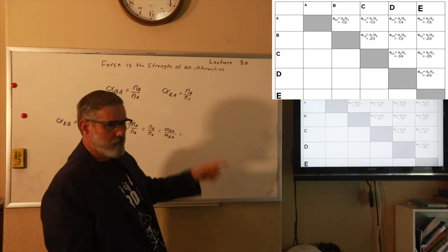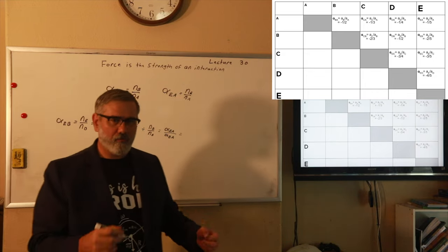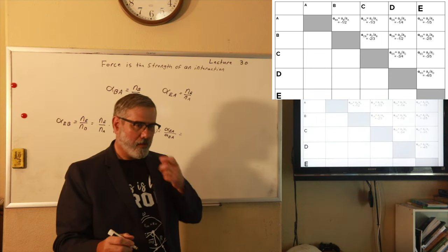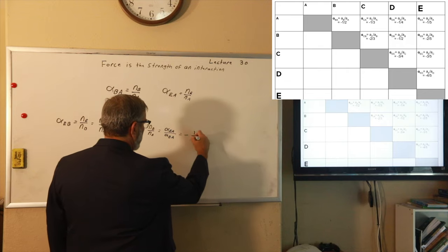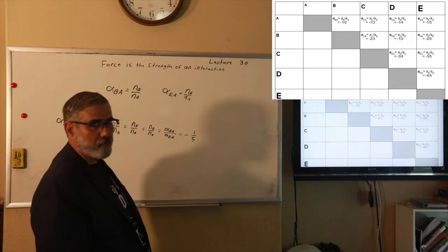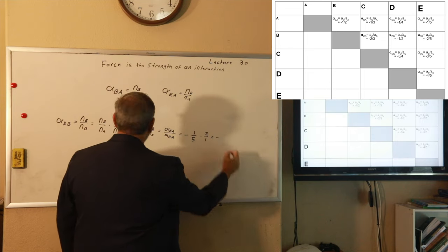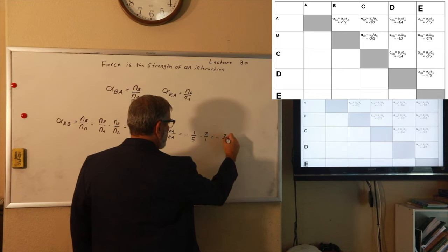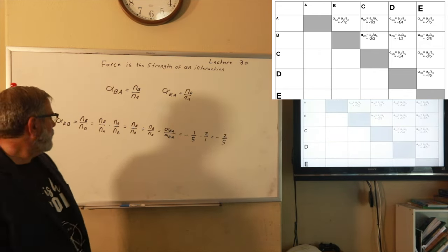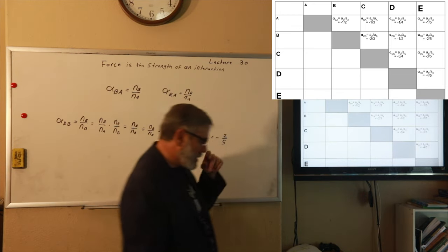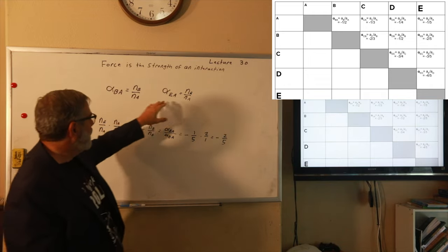Alpha EA is one-fifth and alpha BA is one-half. Dividing one-fifth by one-half is the same as multiplying by two over one, so I predict that alpha EB equals minus two over five. And does that agree with the experimental results in the table? Yes, it's exactly the same as what we observed experimentally. We are able to predict the interaction between E and B based on the interactions between A and B, and E and A.